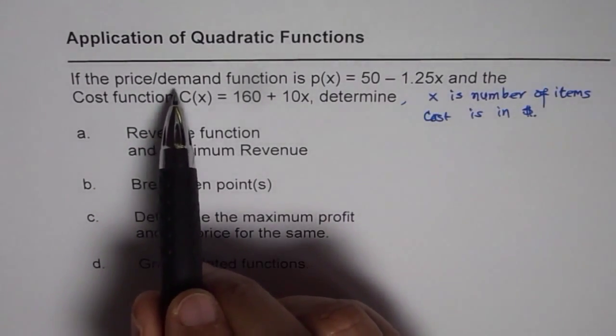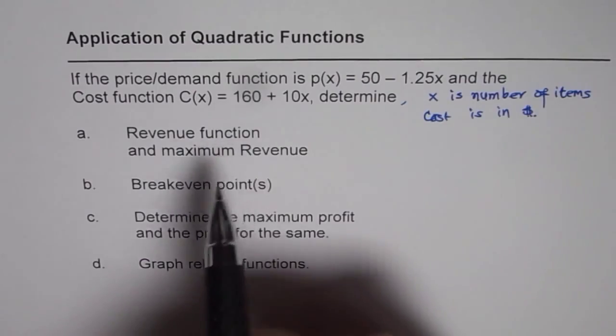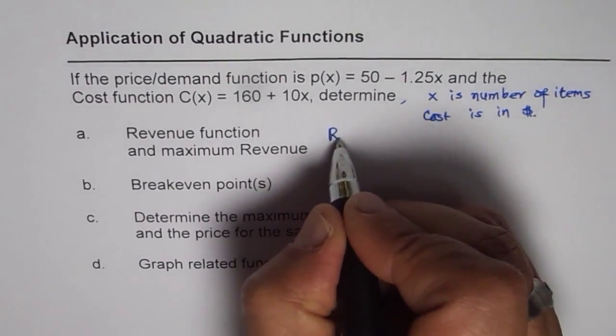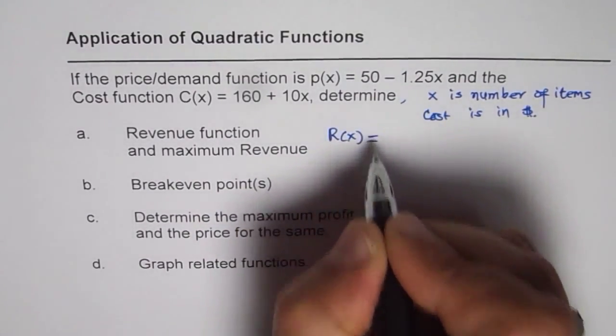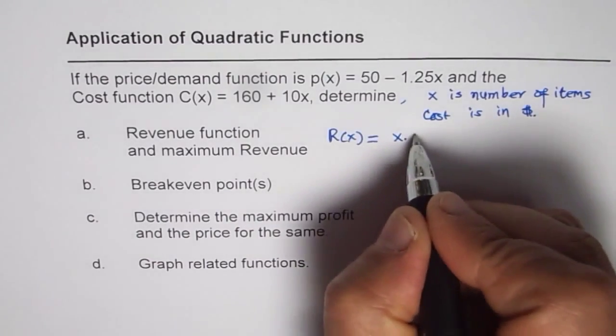Now price is also called demand function, which is P(x) here. So revenue function, let R(x) be the revenue function, will be equals to x times P(x). So to find the revenue function you have to multiply this linear function which is given as a demand function by x.